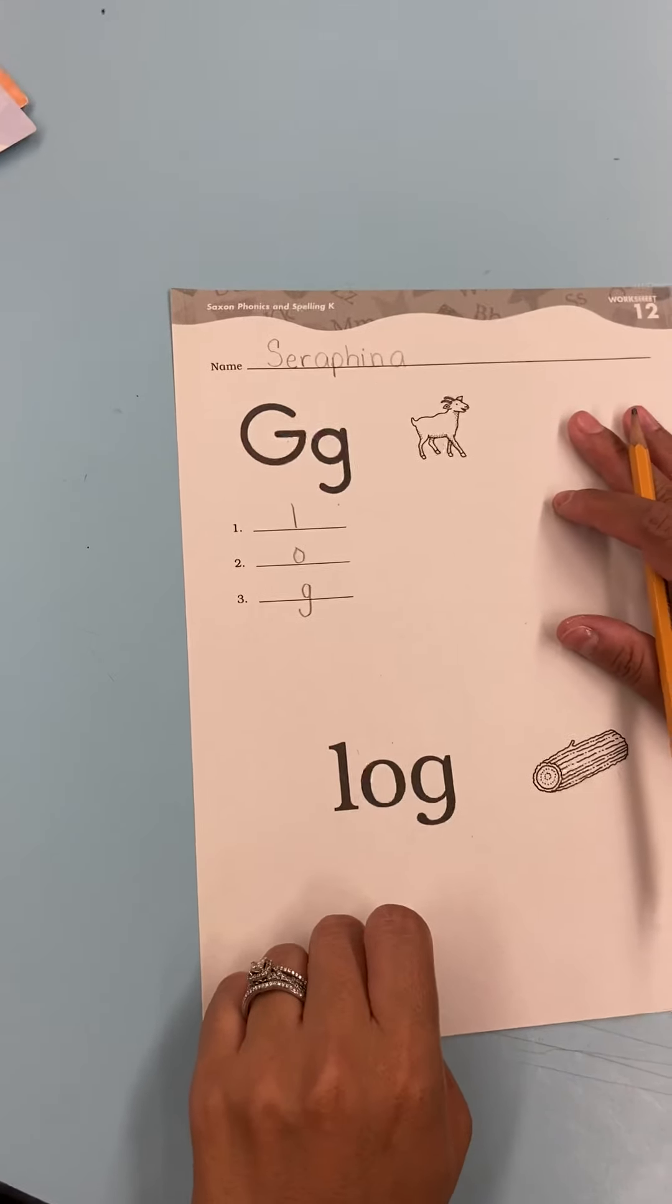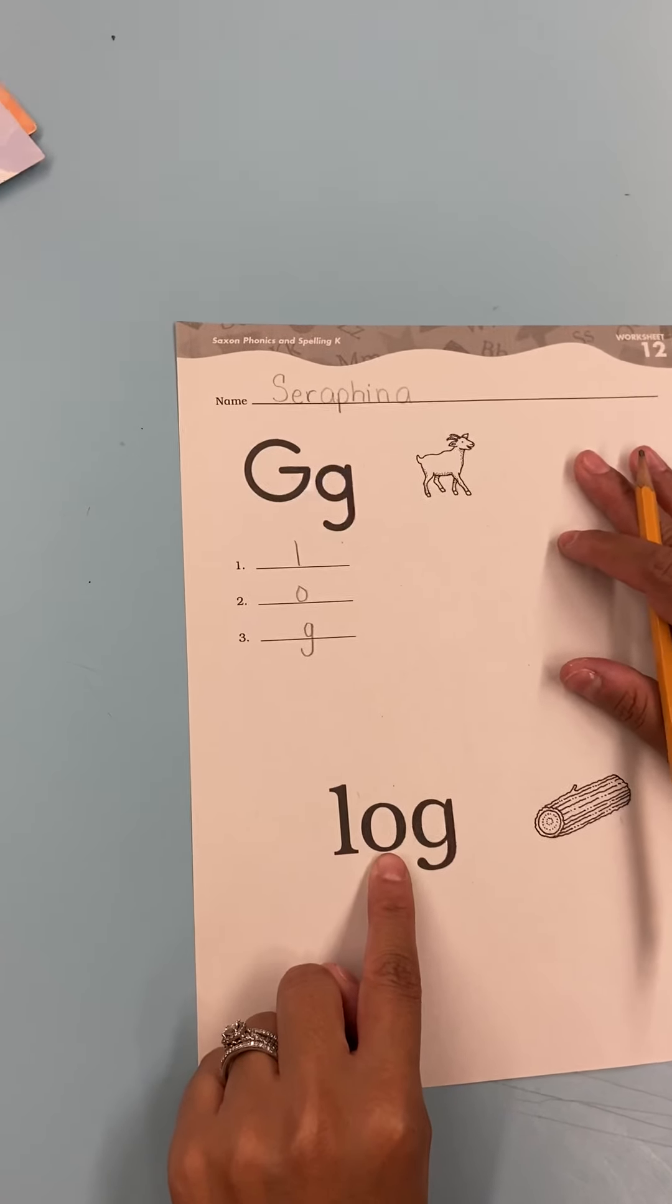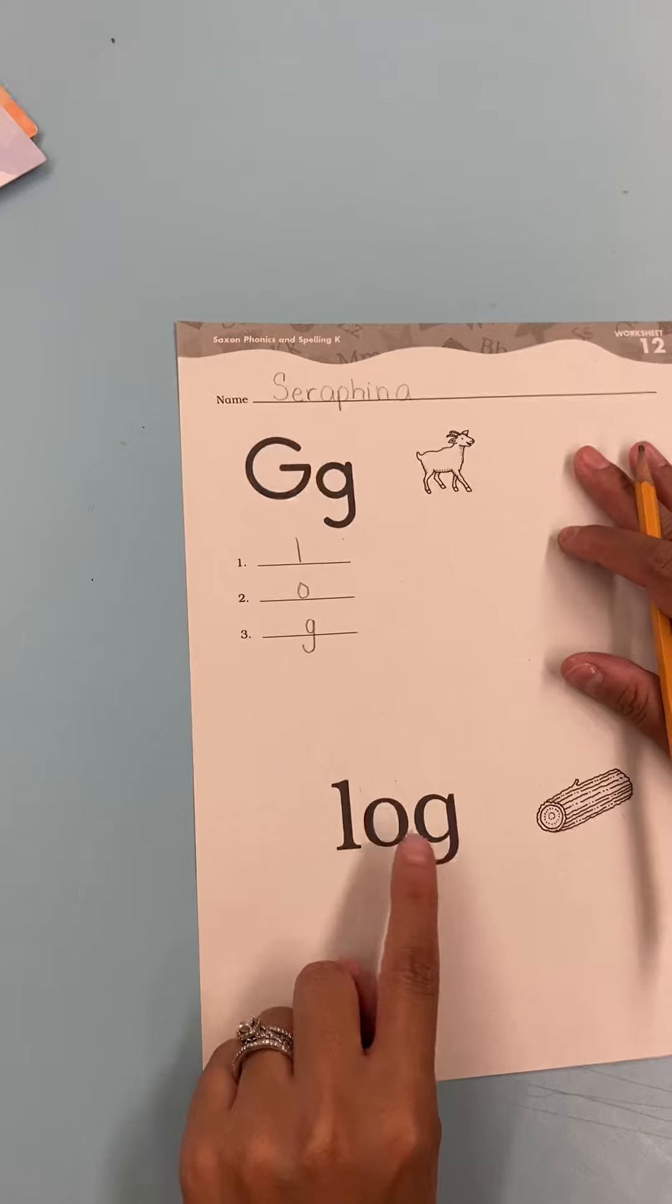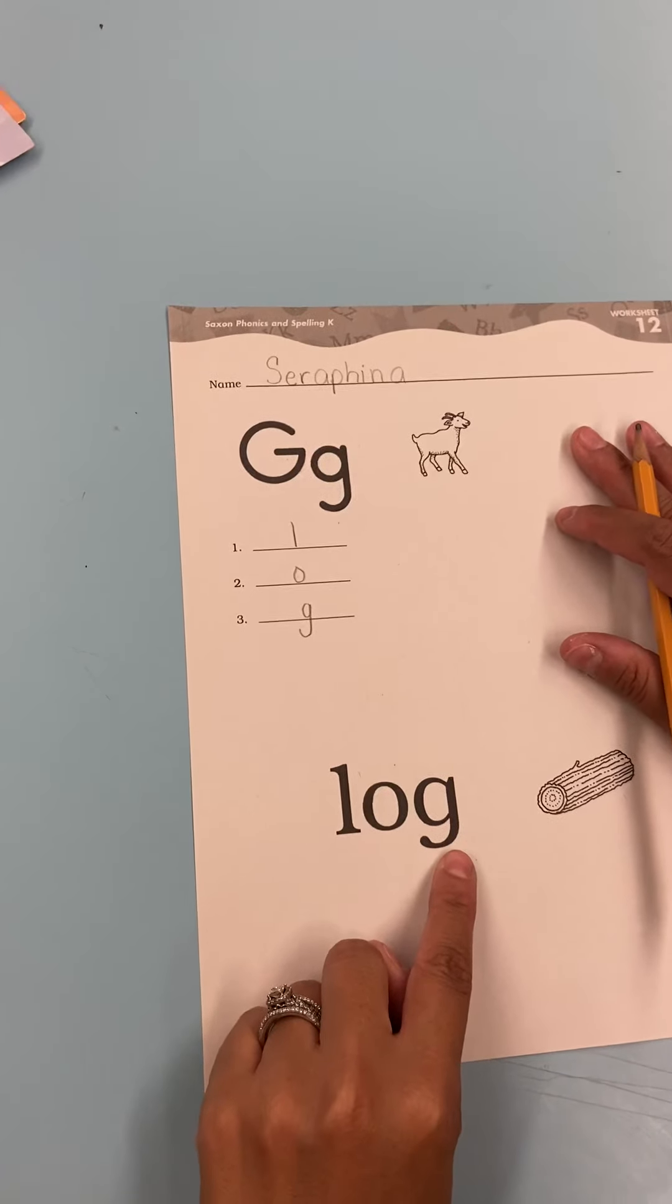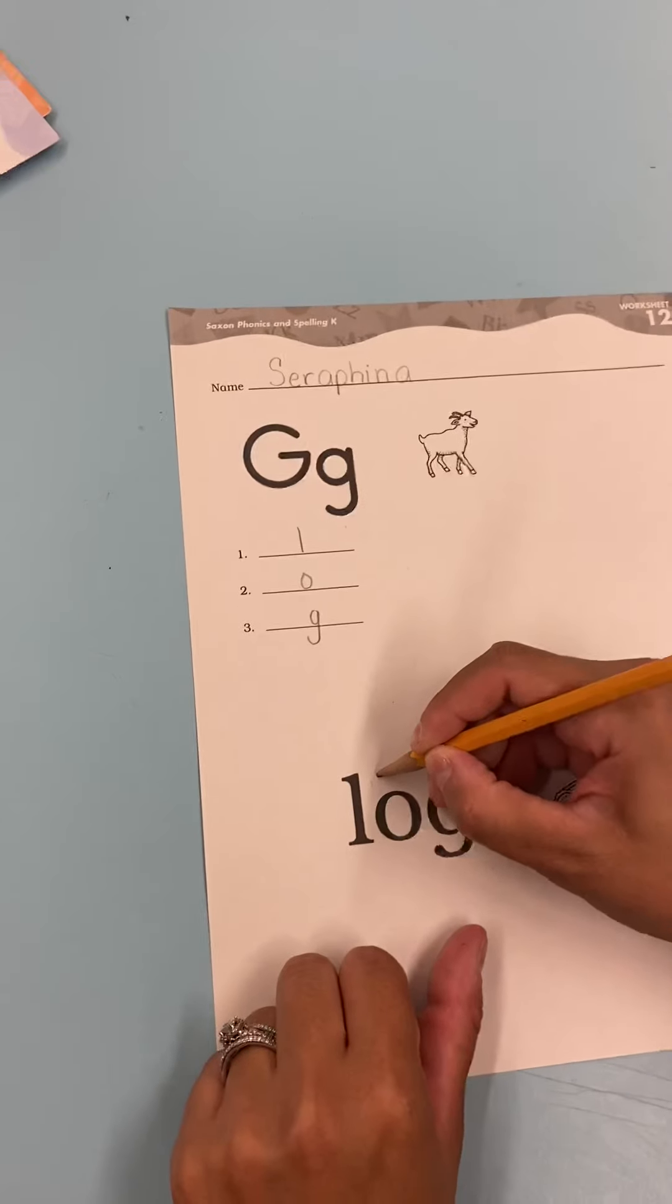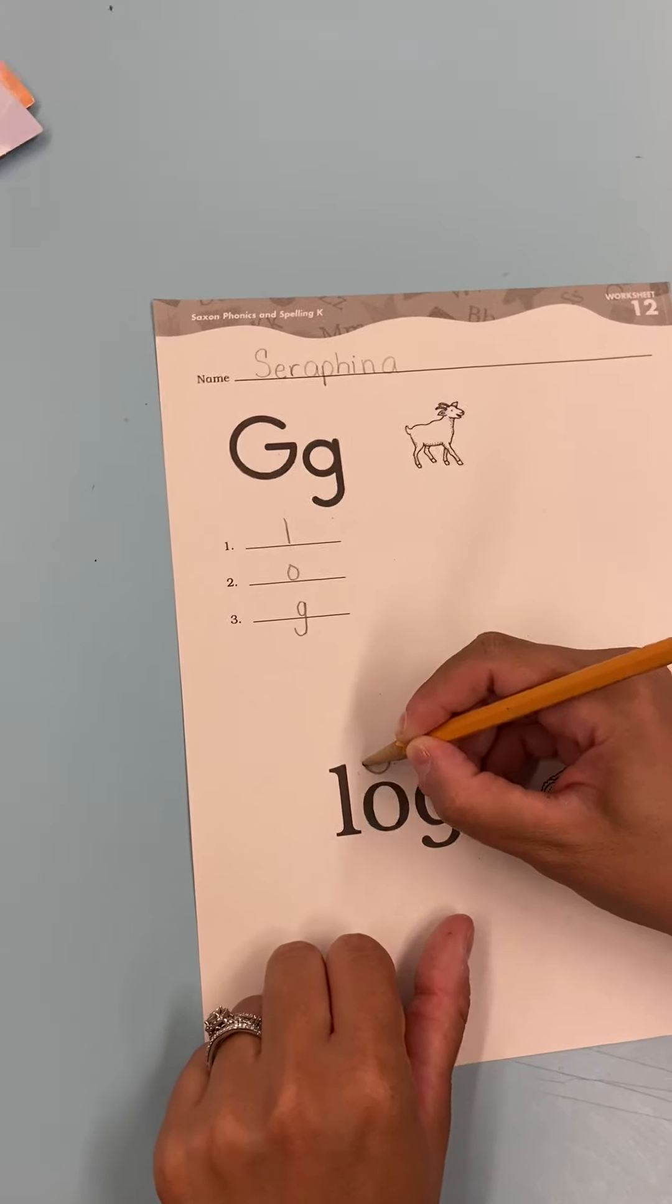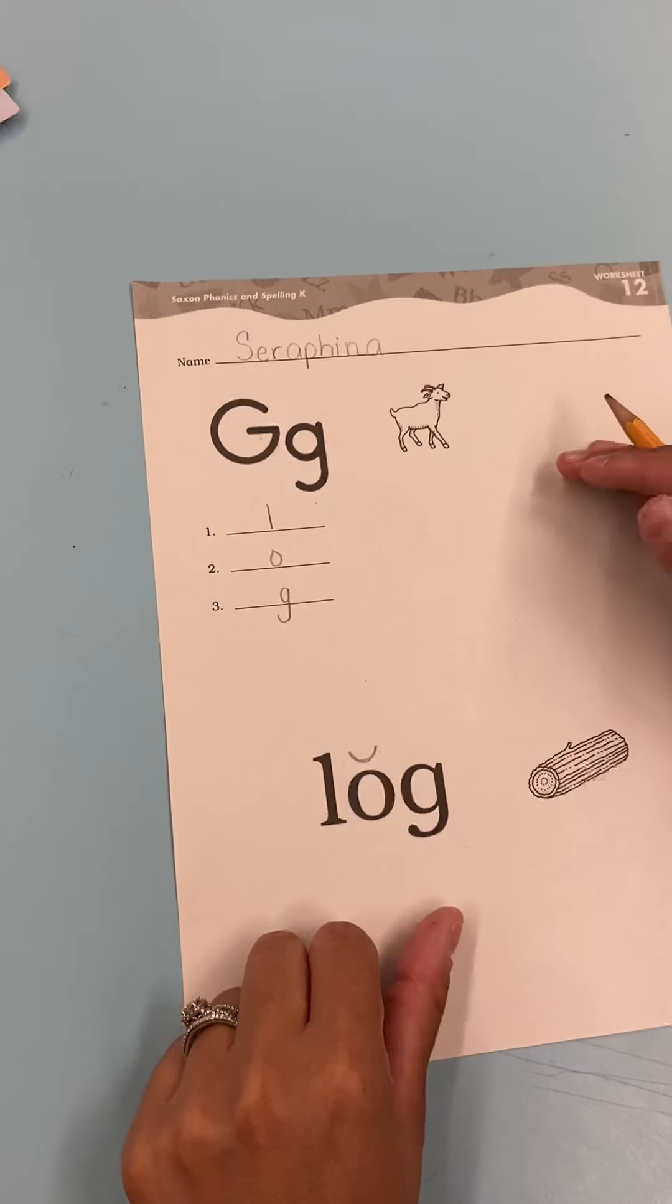Okay. So put your finger under the letter O and we're going to say this rule. A vowel followed by a consonant is short. Code it with a breve. When you code it with a breve, it makes a short sound.